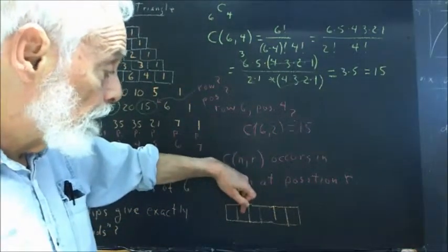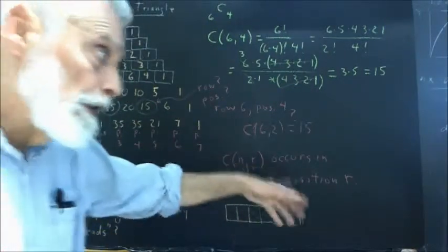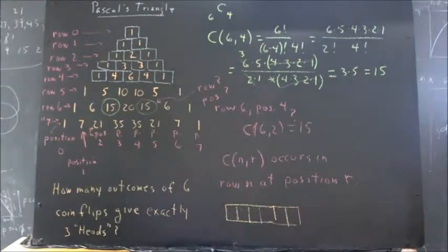Or, the first head could occur in the second, then you could have second, third, fourth; second, third, fifth; second, third, sixth, etc. You could list those, you could count those...